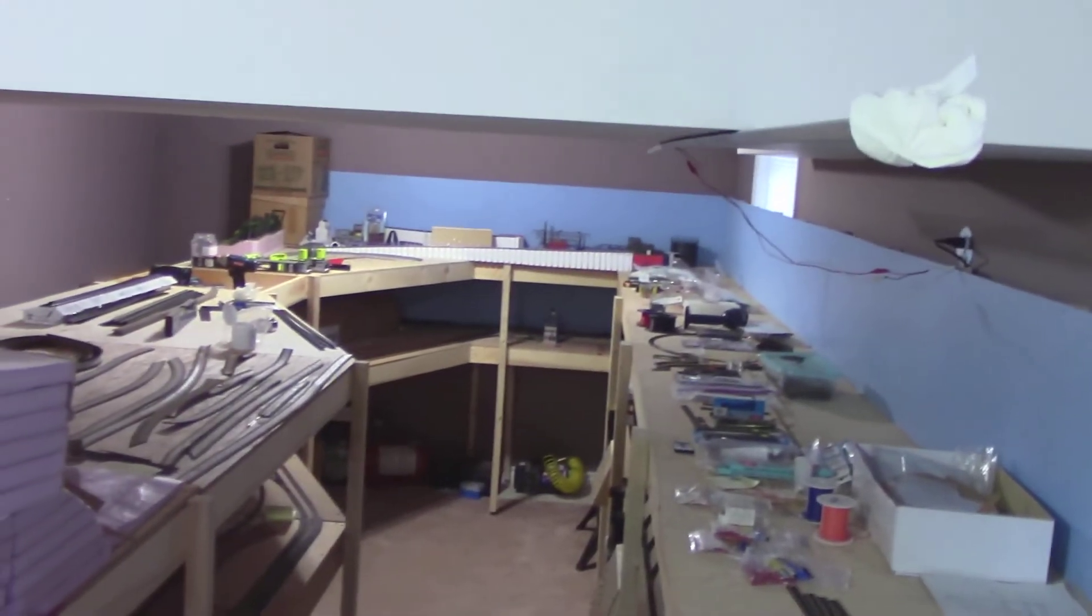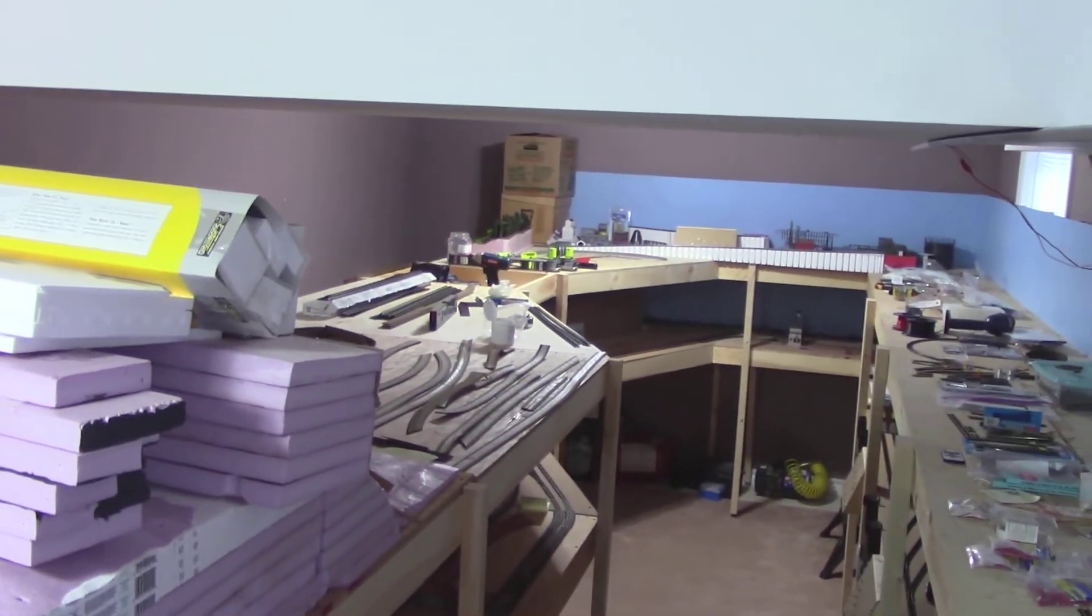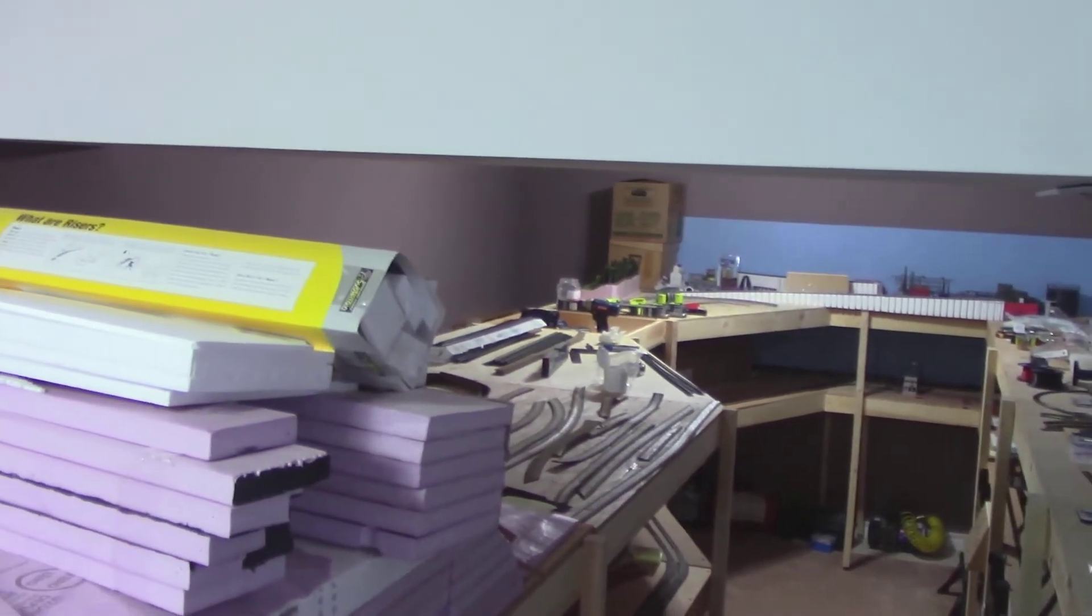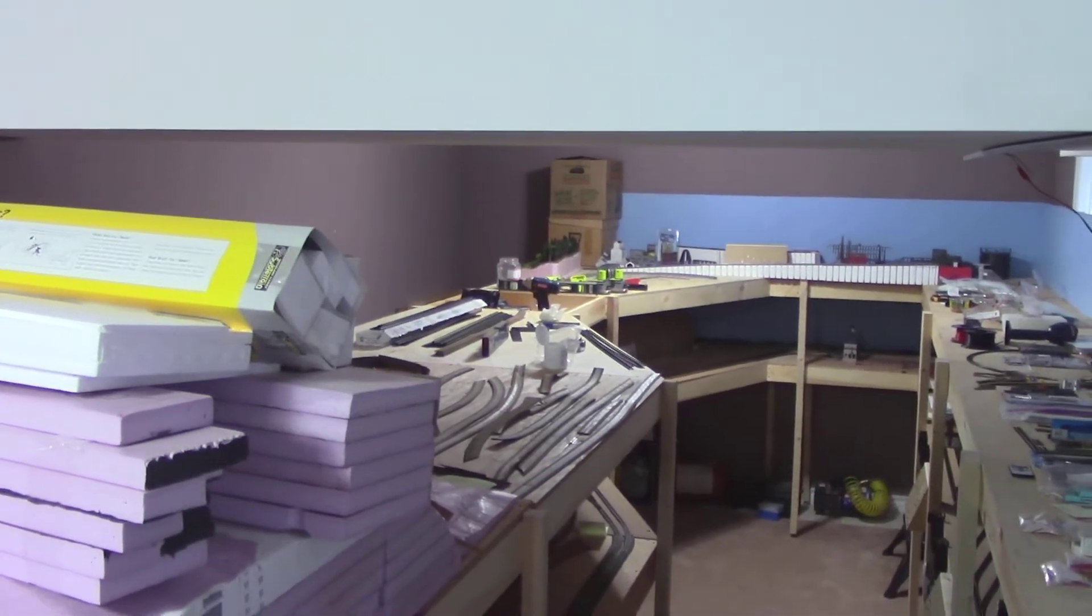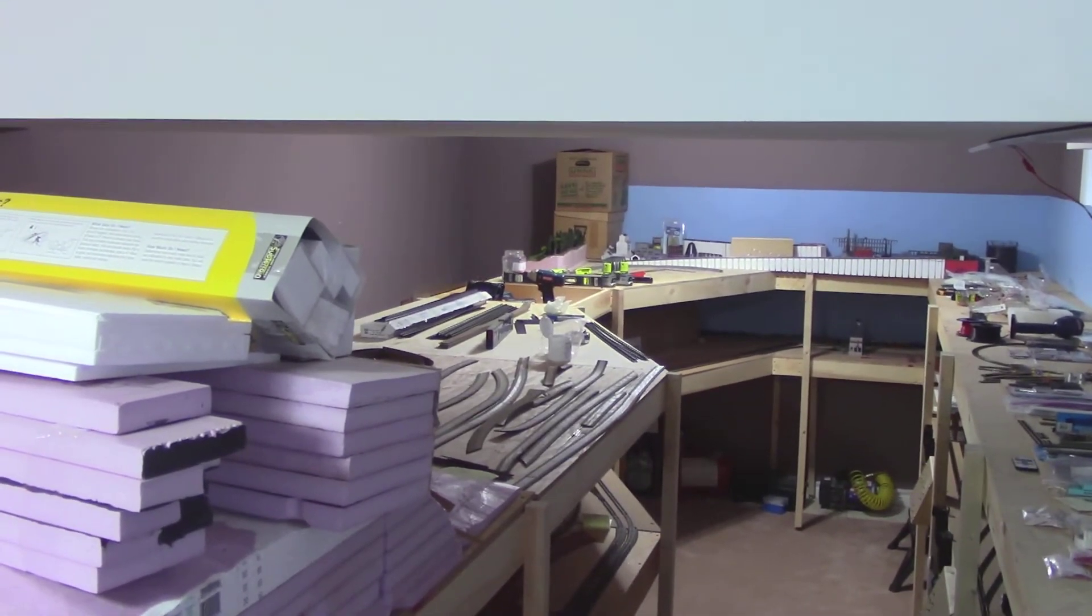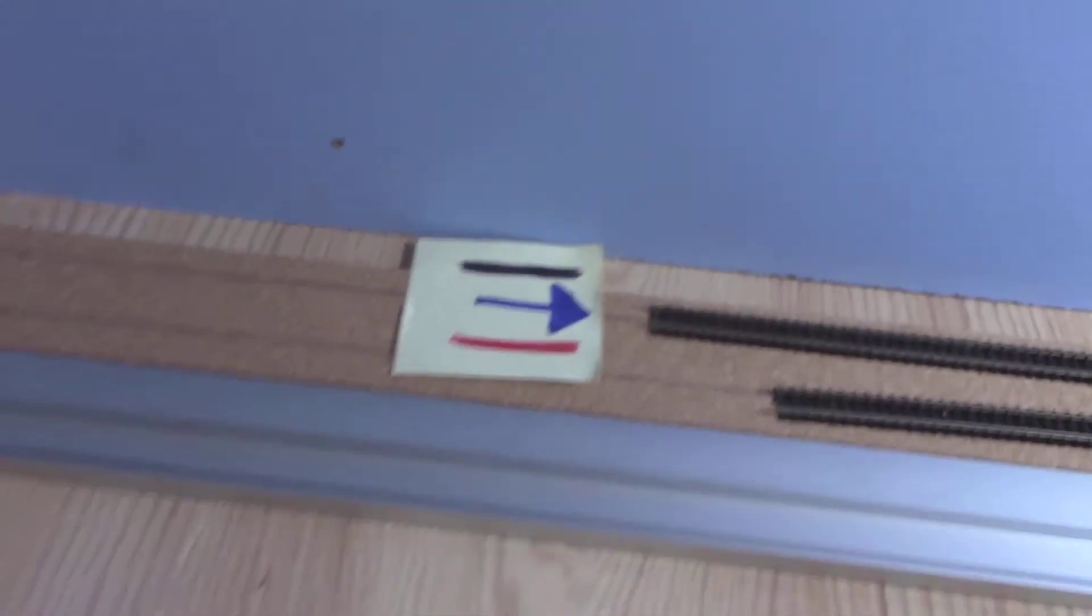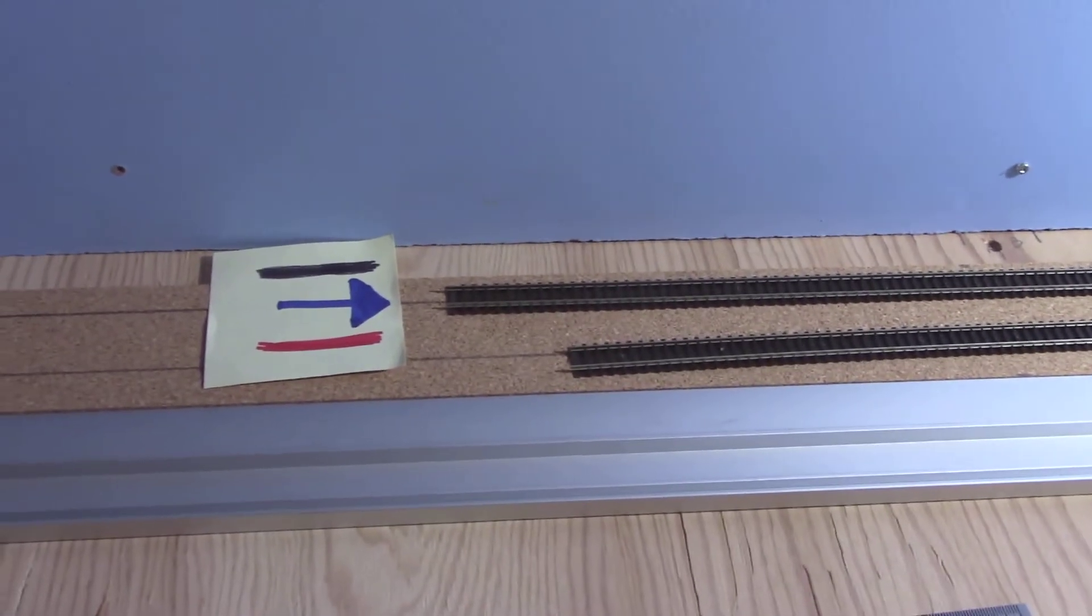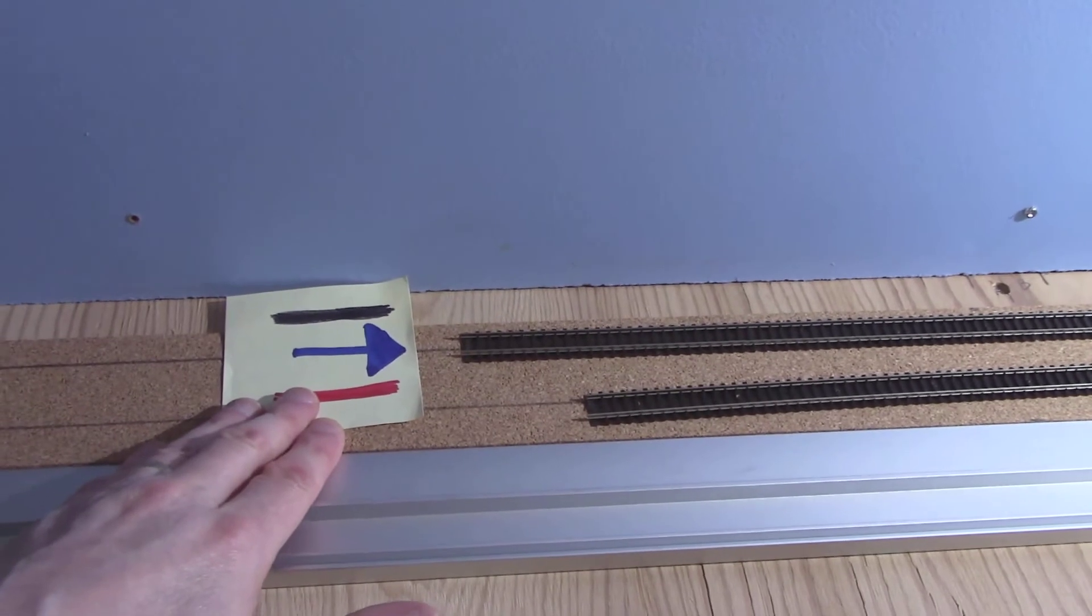I'm going to worry about that once I get the track going down that back wall, because that's when I'm going to need to determine where I'm going to need to put the one curve. The other curve will of course be closer to where those boxes are sitting on the far corner for the outside return loop that is going that way.